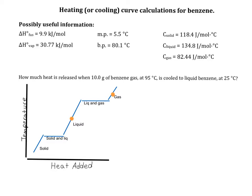Step one, we'll take the gas at 95 degrees C down to the gas at its boiling temperature. Step two, we'll take the gas at its boiling temperature, condense it into liquid, still at the boiling temperature.